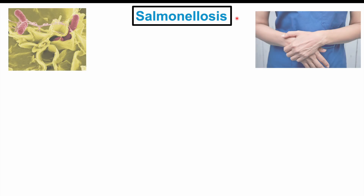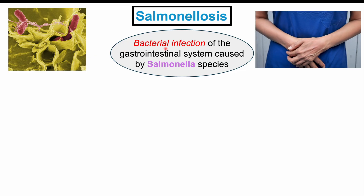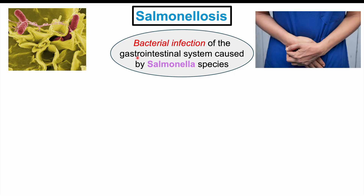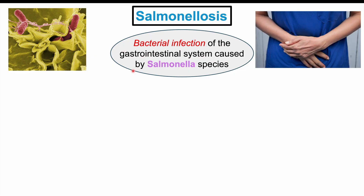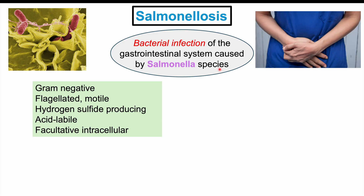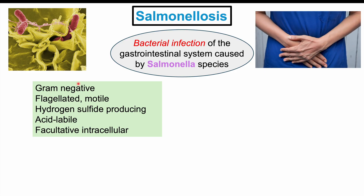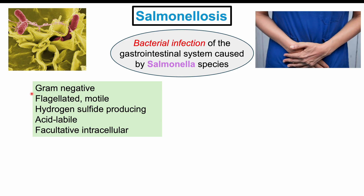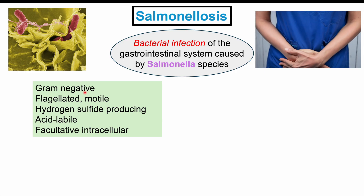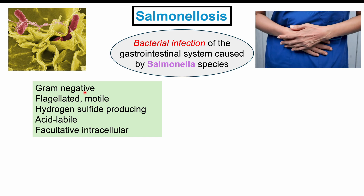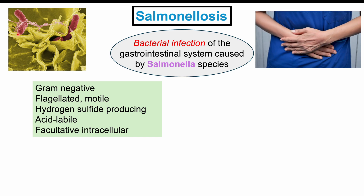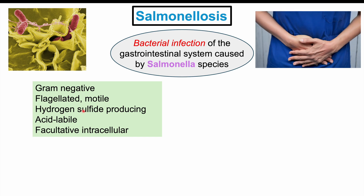Salmonellosis is a bacterial infection of the gastrointestinal system caused by Salmonella species. Salmonella is a particular type of bacteria. It is gram-negative, so when we stain the bacteria it comes up as a pinkish color. It's flagellated, so it has a little tail that it can use to move, making it motile.